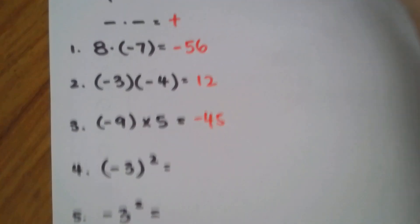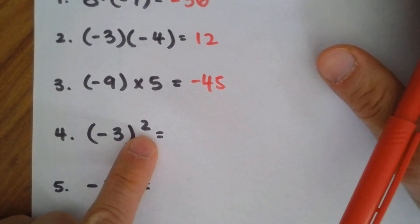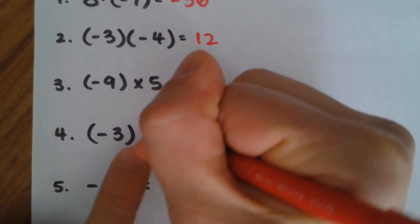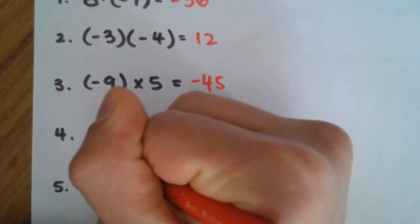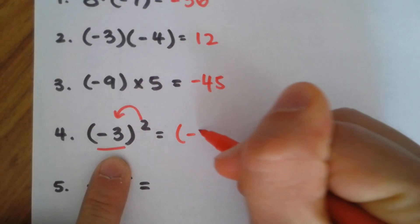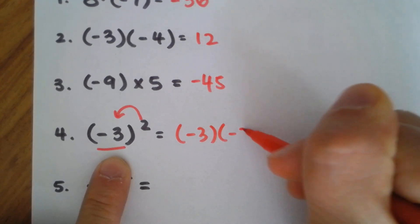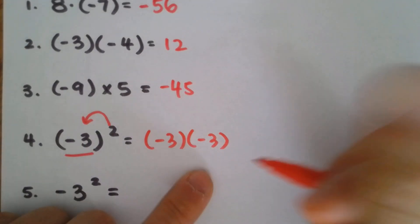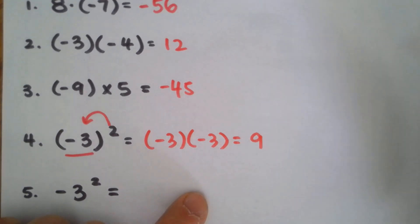What about number four? This is a little bit different — you see this is an exponent. This is negative three to the second power. The exponent is going to duplicate everything inside the parentheses, so expanding it out, that's negative three times negative three. Negative times negative gives you positive, so that's positive nine.